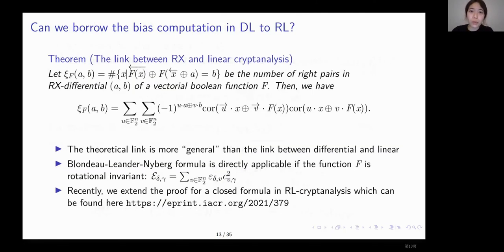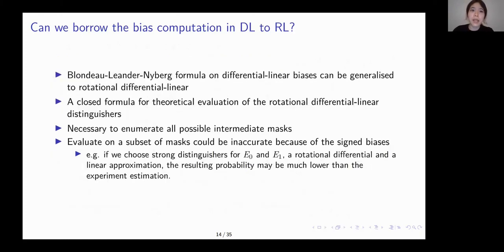So we further proved a link between rotational differential and linear approximations and extend the previous formula on differential linear to rotational differential linear as well. The detailed proof can be found in the paper on ePrint here. This theoretical formula gives a unified view on rotational differential linear and differential linear. In practice, it will still require us to enumerate all intermediate linear masks. And unlike differential probability, the correlations are signed. So a summation over a subspace of linear masks doesn't reflect the real correlation over the whole space, considering the cancellation.